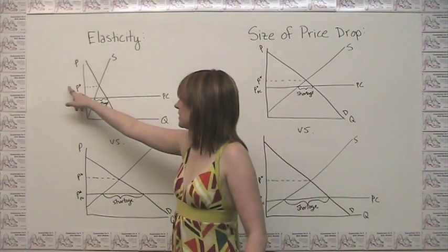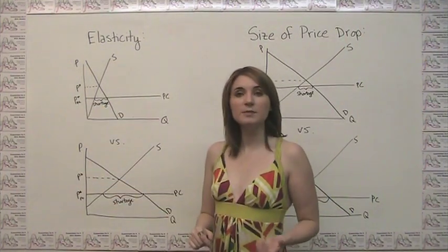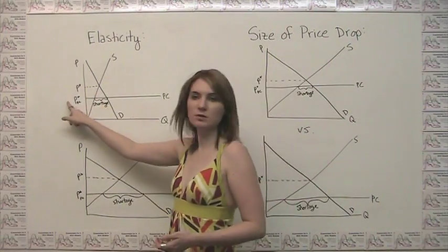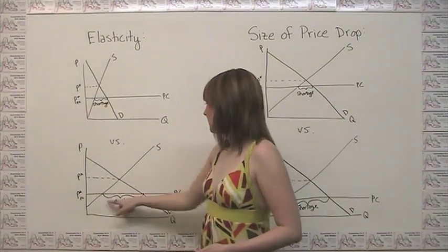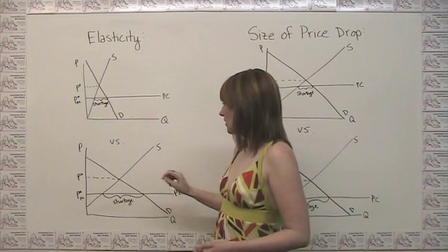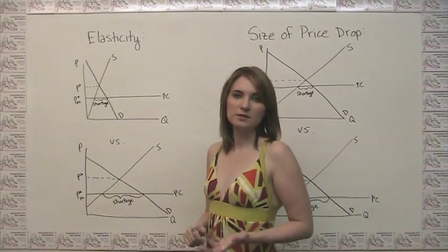You'll notice here that in both cases the price ceiling is the same distance away from the original equilibrium price, but we get a much bigger shortage when our demand and supply are more responsive to price.